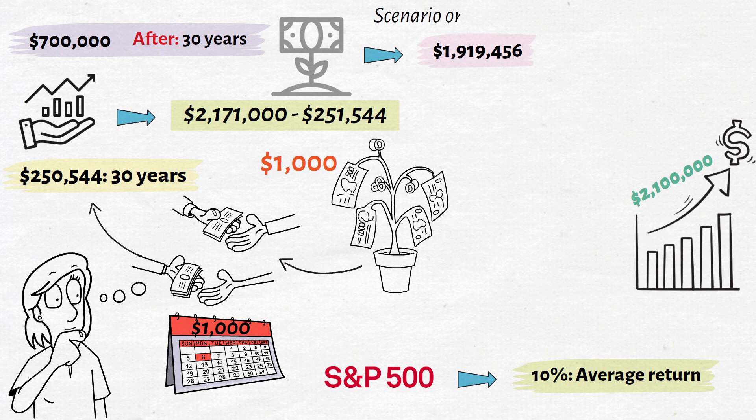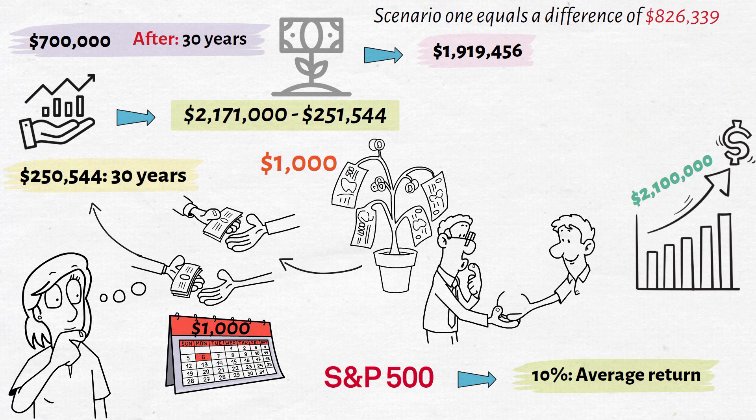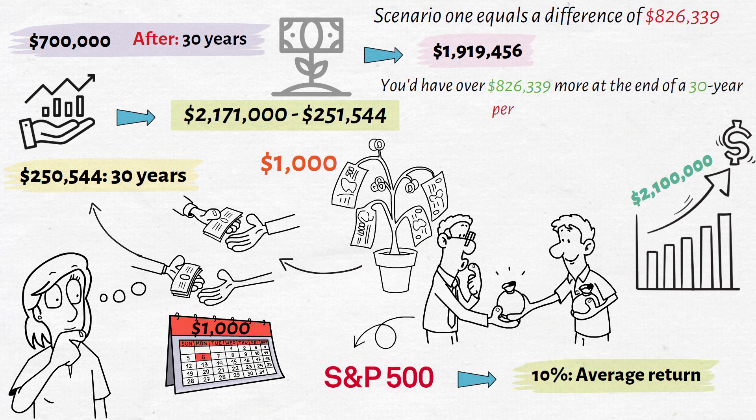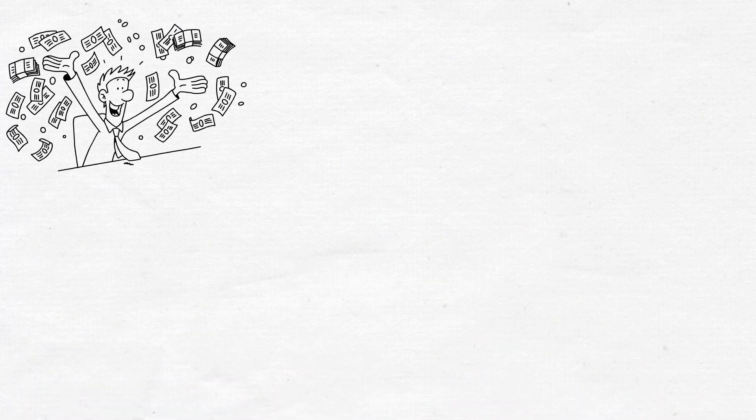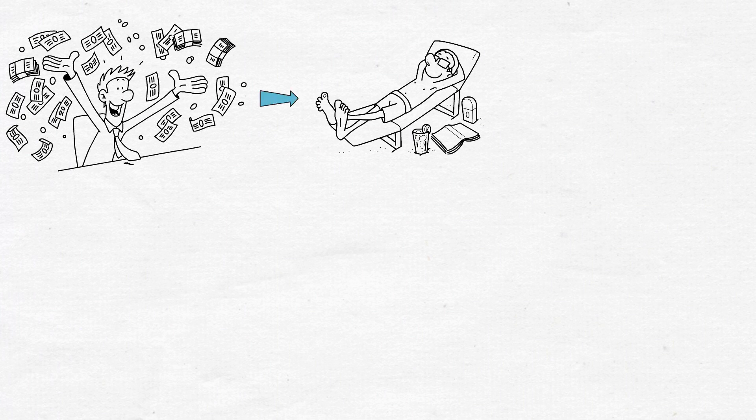Scenario 1 equals a difference of $826,339, which means that if you invested your extra $1,000 per month in the S&P 500 instead of paying down the mortgage, you'd have over $826,339 more at the end of a 30-year period, depending on how your investments performed. Money will compound over many years, and that amount might mean the difference between being able to retire and having to work for many more years.